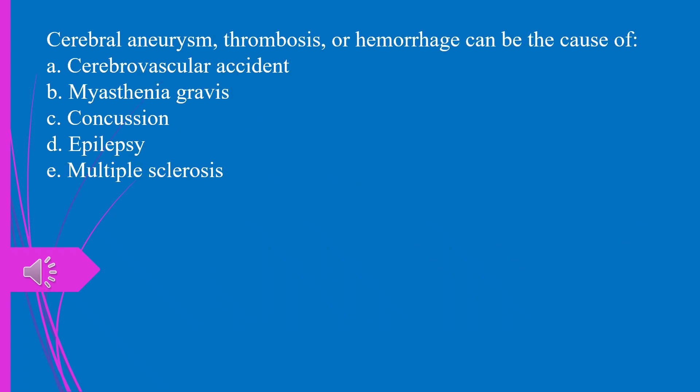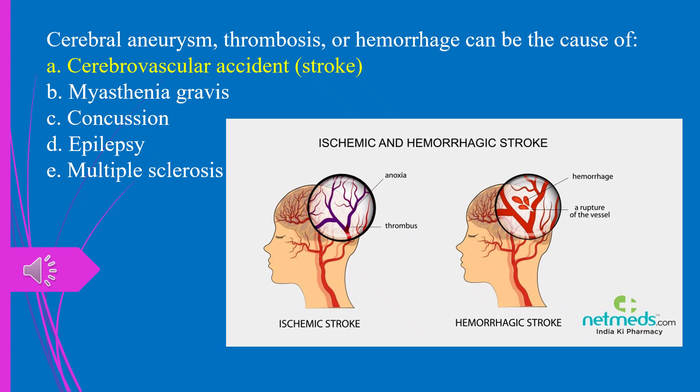Cerebral aneurysm, thrombosis, or hemorrhage can be the cause of, A. Cerebrovascular accident. B. Myasthenia gravis. C. Concussion. D. Epilepsy. E. Multiple sclerosis. The answer is A. Cerebrovascular accident or stroke.